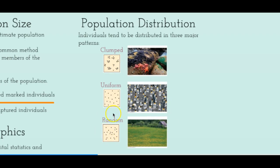The least common type is random distribution, where there is no real regularity to how individuals are distributed. This usually occurs because of a lack of strong social interactions — individuals don't have beneficial relationships requiring them to stay together, and no harmful relationships requiring them to stay apart. For example, when dandelion seeds are dispersed by wind, random distribution occurs as seedlings land in places determined by uncontrollable factors. Weiser larvae can travel hundreds of kilometers powered by sea currents, also resulting in random distribution.